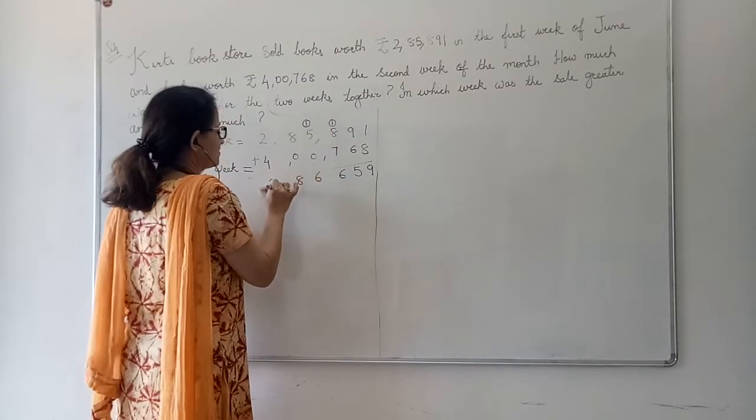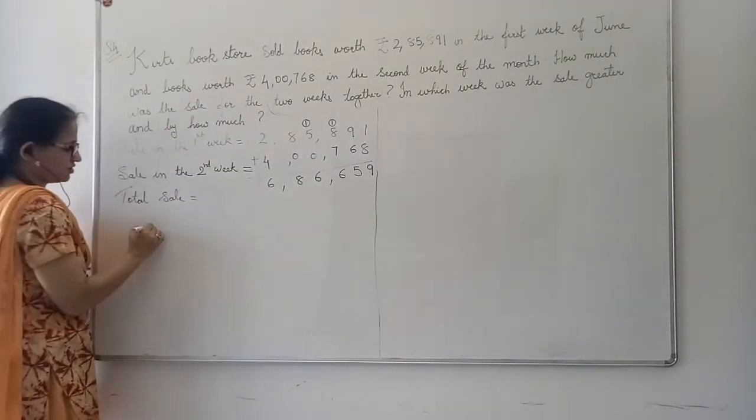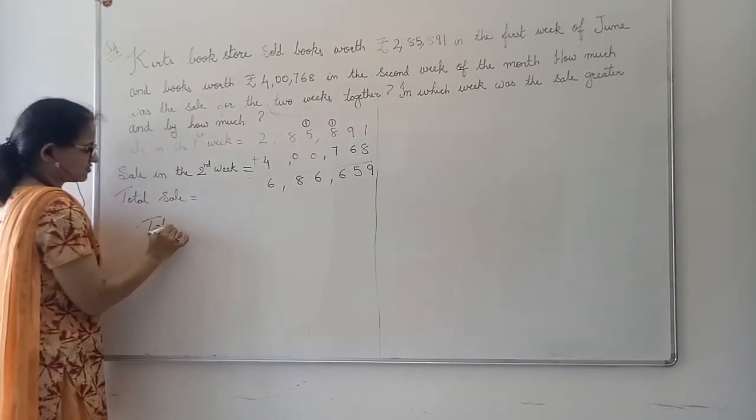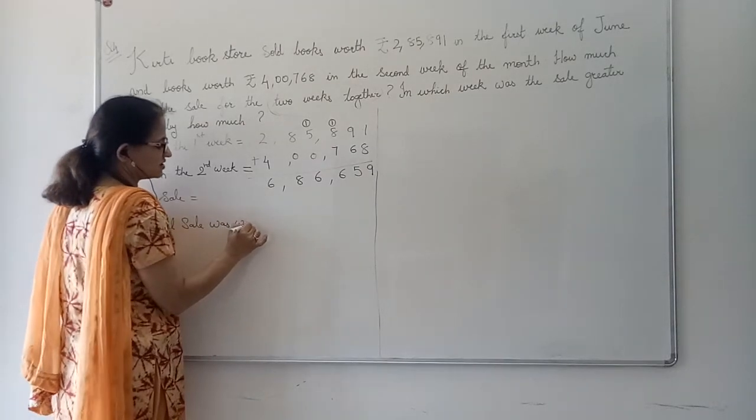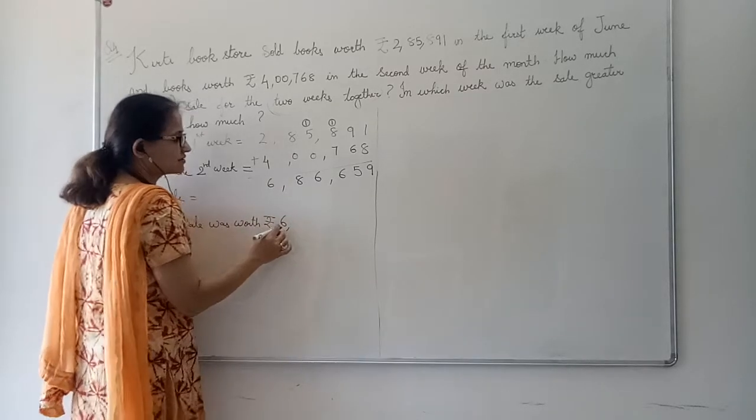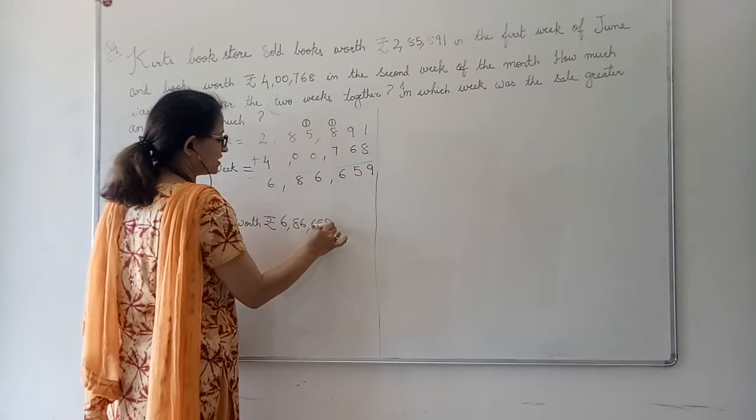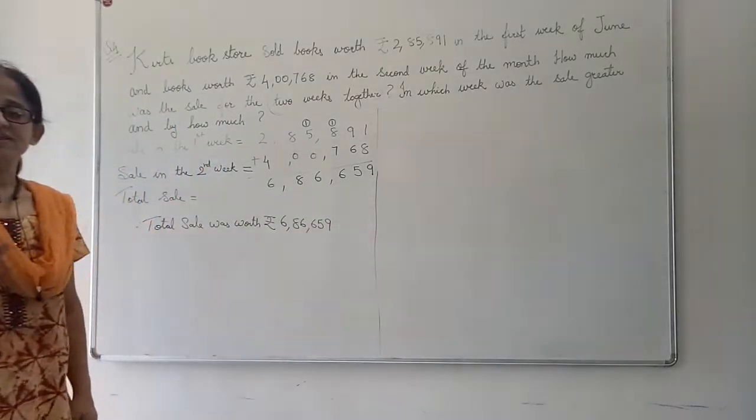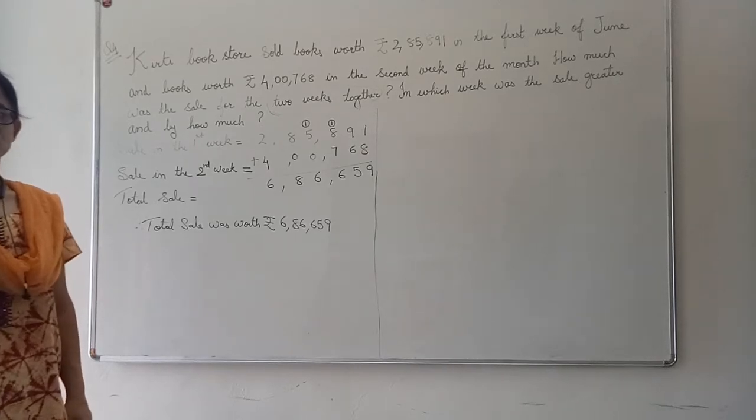6 plus 1, 7, 7 plus 6 becomes 13, 3 down, 1 carry over. 6, 8, 6. So the sale was, therefore, total sale was worth rupees 6,86,659. And this was their sale in the first and the second week of June.